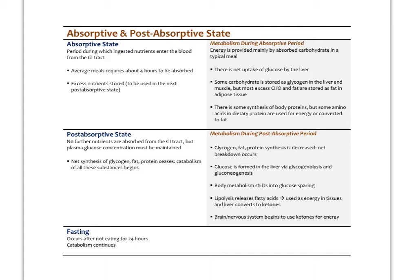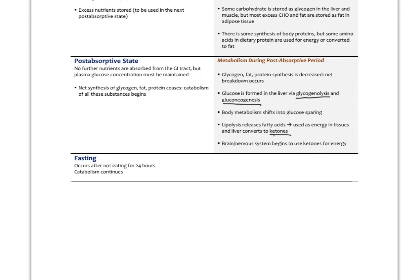Glycogen, fat, and protein synthesis are decreased; we have a net breakdown. Glucose is formed in the liver via glycogenolysis and gluconeogenesis. Body metabolism shifts into protein sparing. This happens usually after four hours of eating. Lipolysis releases fatty acids for energy via beta-oxidation, and the liver converts them into ketones, putting us into mild ketosis. The brain and nervous system can start using those ketones for energy.